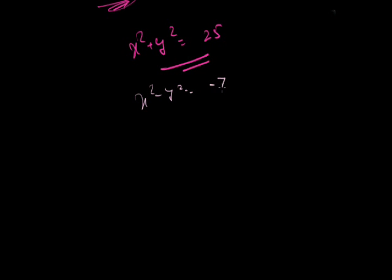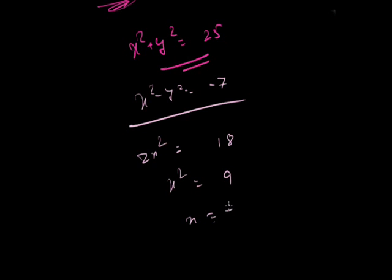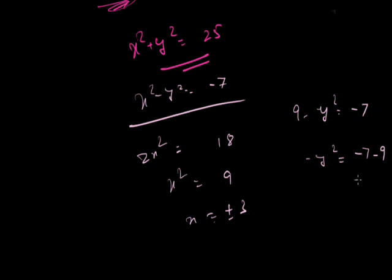Adding the two equations: x squared minus y squared equals minus 7 and x squared plus y squared equals 25. Adding gives 2x squared equals 18, so x squared equals 9, and x equals plus or minus 3. Substituting into x squared minus y squared equals minus 7: 9 minus y squared equals minus 7, so y squared equals 16, and y equals plus or minus 4.